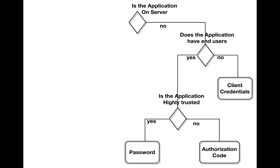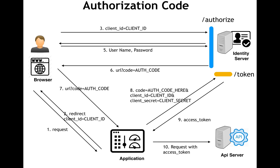So we saw two models: client credentials for background applications, and password for server applications where users fully trust the application and are willing to give their password directly to the app. In case the user is not willing to give their password directly to the app, then we use the authorization code approach. In authorization code, the user gives their password directly to the identity server, while the application gives its secret to the identity server, so both are authenticated directly with the identity server.